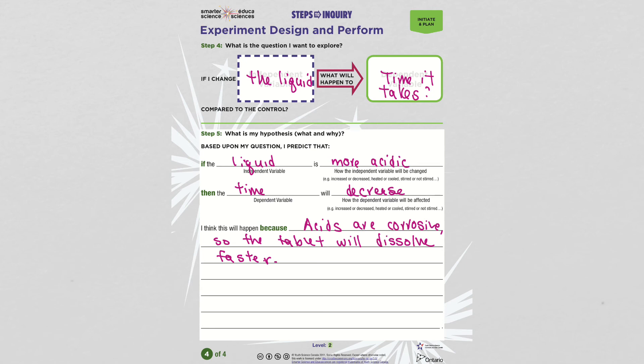So I might say if the liquid is more acidic, the time that it takes for the lid to come off will decrease. So it'll come off faster, I think. That's my guess. And I would say why I think that. I think this will happen because acids are corrosive. So maybe it'll dissolve the tablet faster. So if it dissolves the tablet faster and makes the gas faster, then the lid will pop off faster. So that would be my hypothesis.